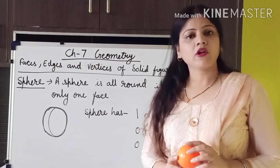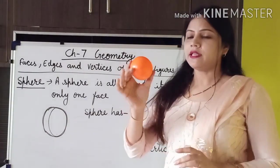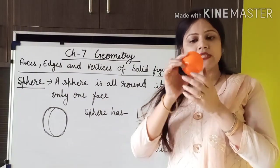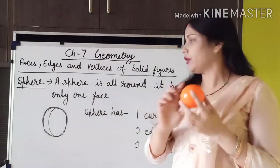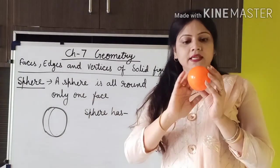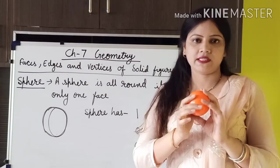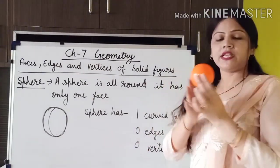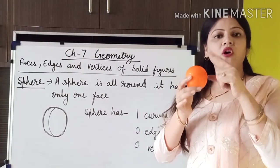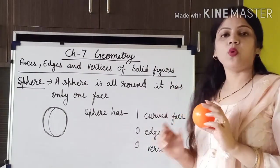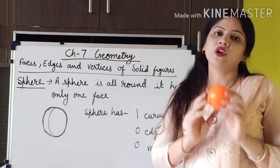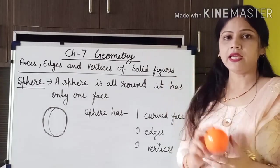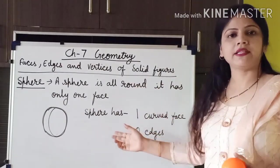The third type of solid shapes is sphere. A sphere is all round — from wherever you will see it, it is round. It has only one face, that is a curved face. Just pause this and write this in your maths copy.